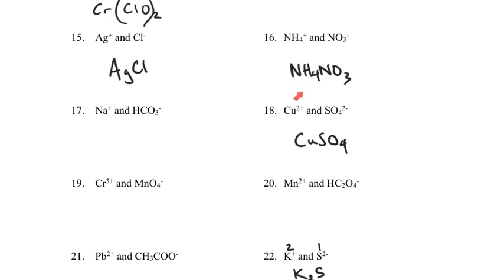Parentheses are used only when two things are true: number one, the ion needs to be a polyatomic ion, and number two, you need more than one of them. For number 16, both ions were polyatomic but you only needed one of each, so no parentheses were needed. For number 22, there were two potassiums but no parentheses because potassium is a monatomic ion. Parentheses apply only to polyatomic ions that appear more than once.